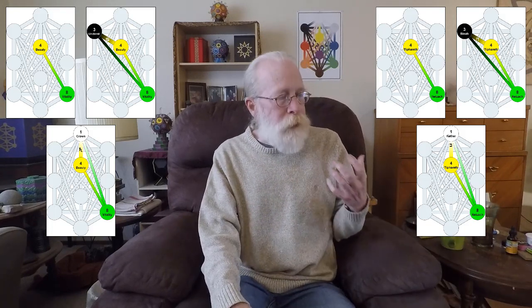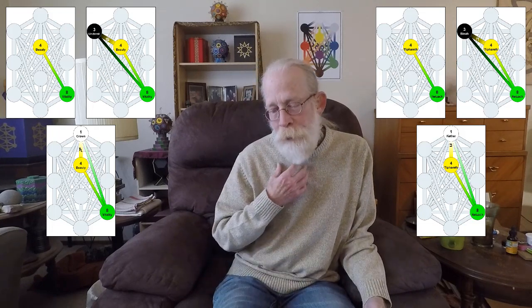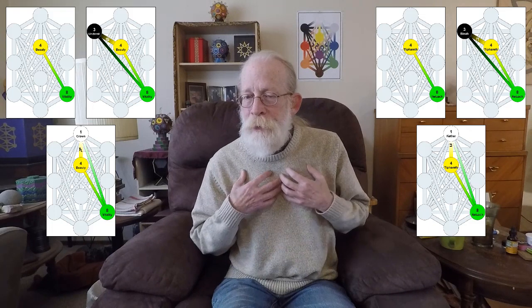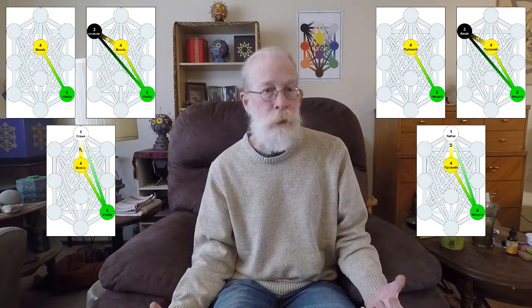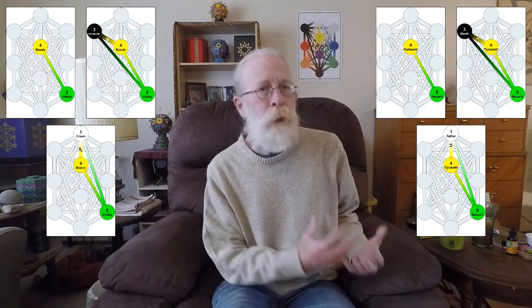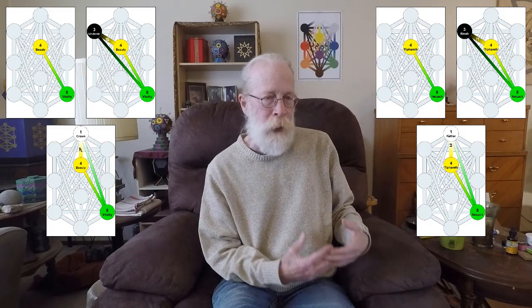And that's what this hidden path is all about, and the other hidden path that comes from Tiferet down to Hoth. This is also threads of continuity from one lifetime to the next. That's what this core path of these three gates is all about.